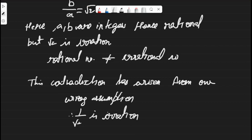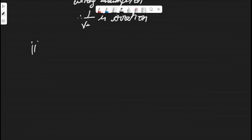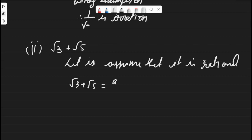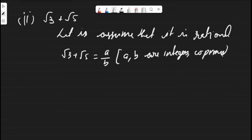That was simple — nothing much to it. The second one is root 3 plus root 5. Same approach: let us assume that root 3 plus root 5 is a rational number, so root 3 plus root 5 will be equal to a by b, where a and b are integers and co-primes.